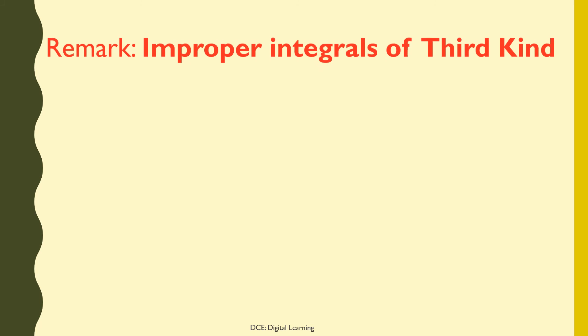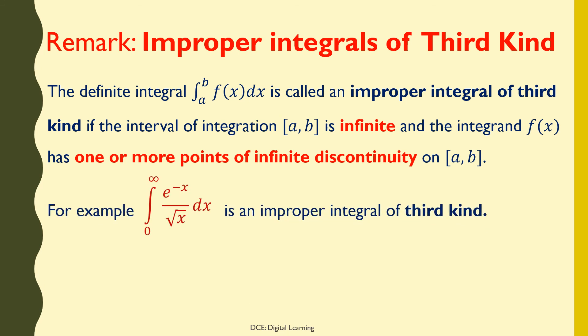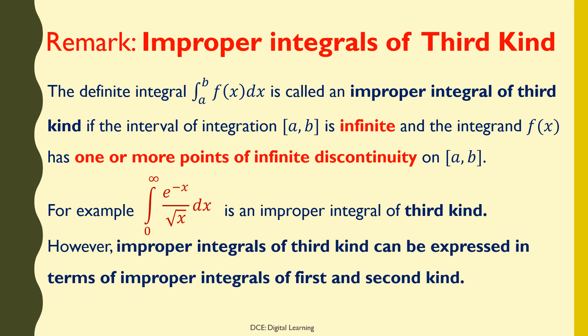Remark — Improper Integrals of Third Kind. The definite integral of f(x) dx from a to b is called an improper integral of third kind if the interval of integration [a,b] is infinite and the integrand f(x) has one or more points of infinite discontinuity on [a,b]. For example, the integral of e^(−x) / √x dx from 0 to infinity is an improper integral of third kind. However, improper integrals of third kind can be expressed in terms of improper integrals of first and second kind.